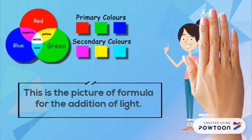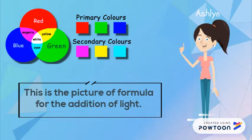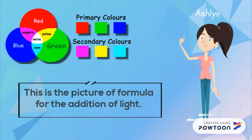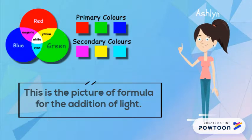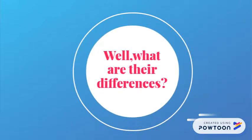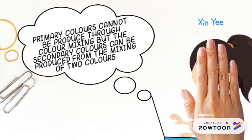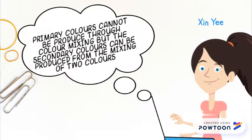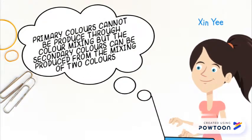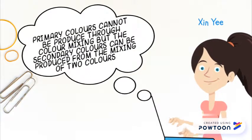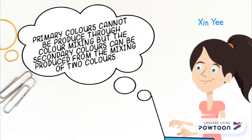This is the picture of the formula for the addition of light. What are their differences? Primary colors cannot be produced through color mixing, but the secondary colors can be produced from the mixing of two colors.